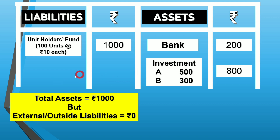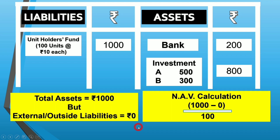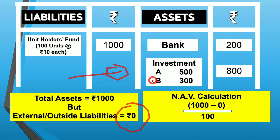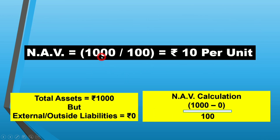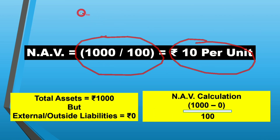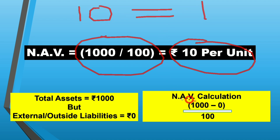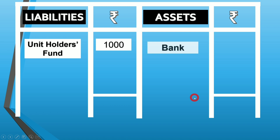Total assets are rupees 1,000, but external outside liabilities are zero, because the unit holders' fund is not an external liability — it belongs to the investors. With no salary or brokerage to pay, the NAV calculation is: 1,000 minus 0, divided by 100 outstanding units, which equals rupees 10 per unit. So for every one unit, the investor pays rupees 10.